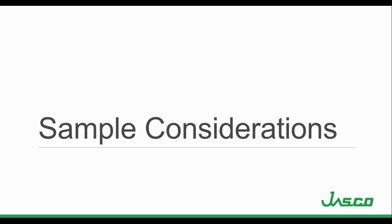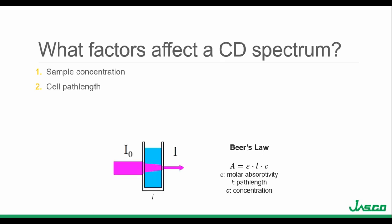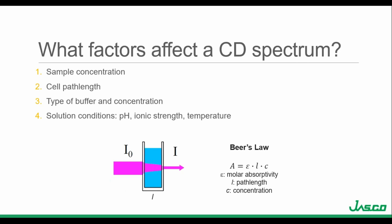Now I'm going to go over some sample considerations — specifically the physical sample. What factors affect a CD spectrum? The sample concentration and cell path length are important. Since CD is an absorption technique based on Beer's Law, where A is absorbance, epsilon is the molar absorptivity constant, L is the cell path length, and C is the chromophore concentration, the amount of light absorbed is dependent on concentration and path length. The type of buffer and buffer concentration also affect the CD spectrum, as well as solution conditions such as pH, ionic strength, and temperature.